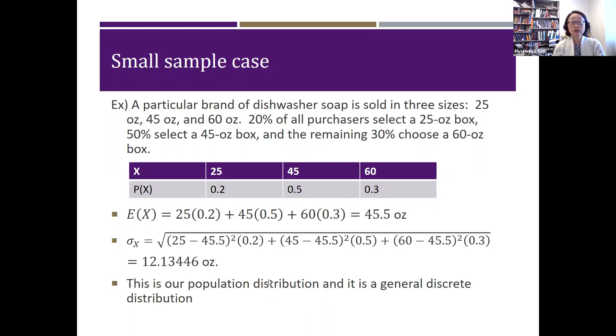Before we actually move on talking about sampling distribution, we can look at some characteristics of the population. So expected value of X, if you actually go back to your Chapter 6 discrete random variable case, when you have possible X's and corresponding probabilities, you can use this formula: summation of X times probability of X, and then you can come up with your expected value, right? So expected value is same as mean. So what you're going to do is multiply X and probability of X for each value and sum it up. And it becomes 45.5, and that will be your mean amount of dish soap size.